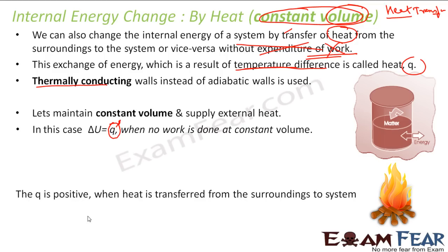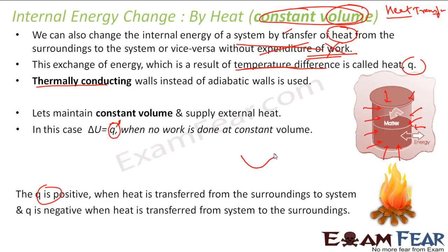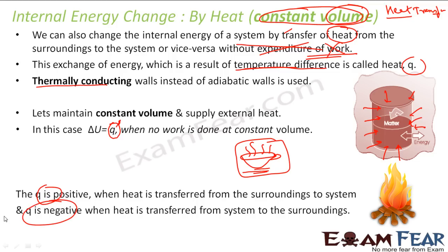The sign convention here is: heat is positive when it is transferred from surrounding to the system. If the system is getting heat, the internal energy of the system will increase, so the change in internal energy is positive. But if, for example, there is a cup of coffee in your room, it cools down because heat is transmitted from the coffee system to the surrounding — the room. In that case, the system loses internal energy, and Q is negative. Q positive means the system is getting heat; Q negative means the system is emitting heat.